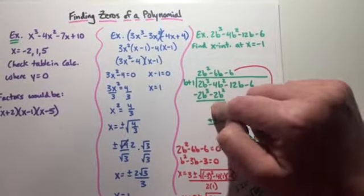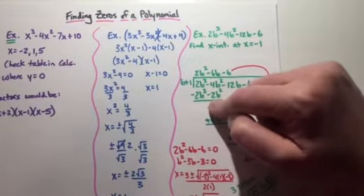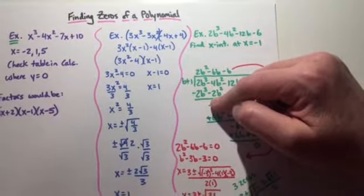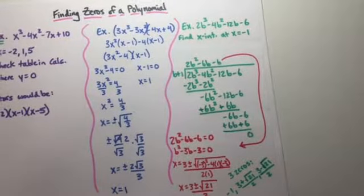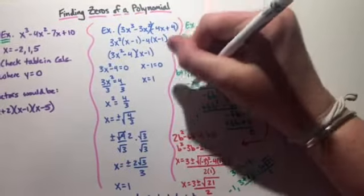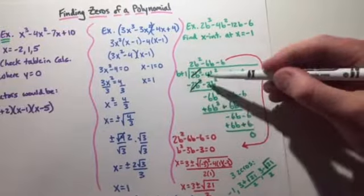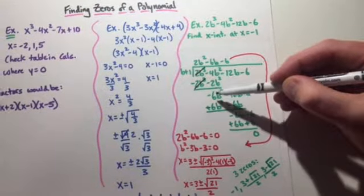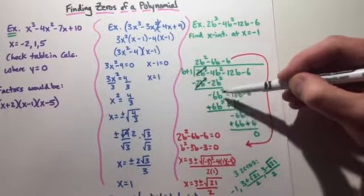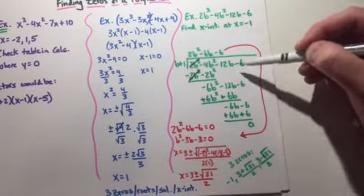So you can think of it as subtracting, or change the sign of them, whatever is easiest for you to think about. And then the first two terms should always cancel out. And you bring down what's left. So -4 and -2 would be -6b², and I just brought the rest down.